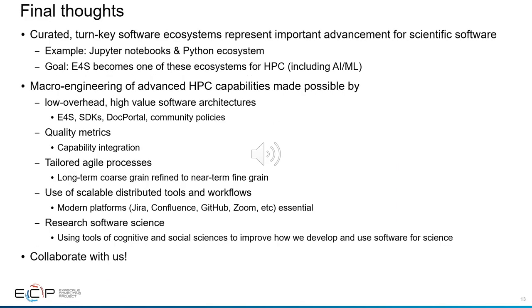Curated turnkey software systems represent an important advancement for scientific software — for example, Jupyter Notebooks and Python ecosystems. The goal for E4S is to become one of these ecosystems for HPC. Much of software engineering emphasis for CSE software has been on the individual and small team level. We believe that macroengineering can provide an important and qualitative improvement for everybody in the HPC community, and we would love it if you would collaborate with us.